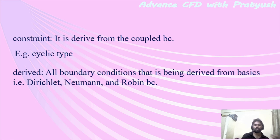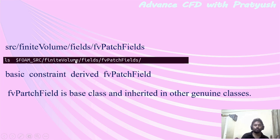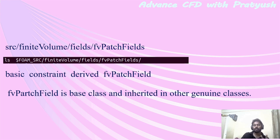To summarize: there is a basic folder for Dirichlet, Neumann, Robin, and coupled types; a constant folder for boundary conditions derived only from the coupled type; and a derived folder for boundary conditions using other basic types. You can find these at the location: source folder, then finite volume, then fields, then fvPatchFields, where you will find the different kinds of boundary conditions. The fvPatchField is the base class that must be inherited in any other type of boundary condition.